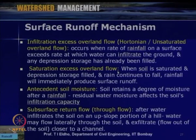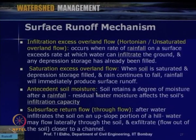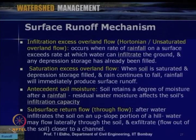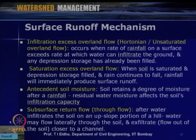Runoff mechanisms include: infiltration excess (Hortonian) overland flow — when rainfall rate exceeds infiltration rate and depression storage is filled; saturation excess overland flow — when soil is saturated and depression storage is filled, further rainfall immediately produces runoff; and antecedent soil moisture, which affects infiltration capacity and thus whether runoff is faster or slower. There is also subsurface return flow (through-flow): water that infiltrates on an upslope hill may flow laterally through soil and exfiltrate near a channel, also contributing to runoff.